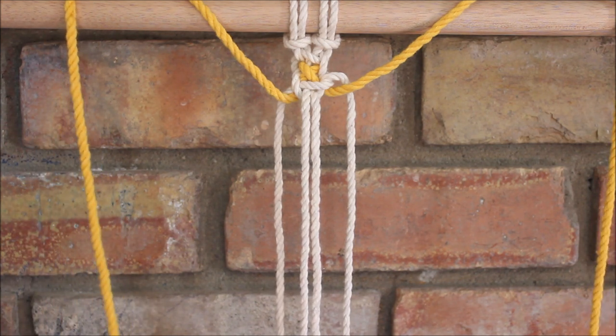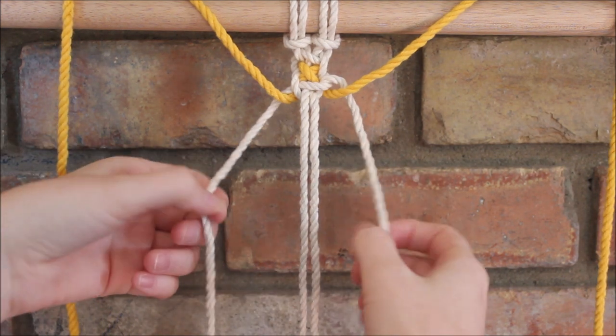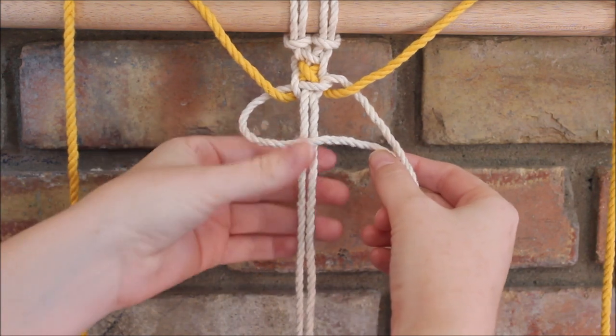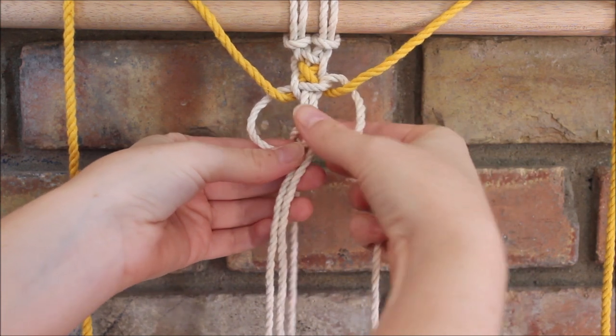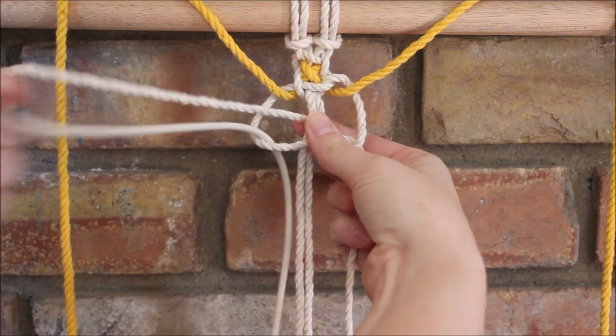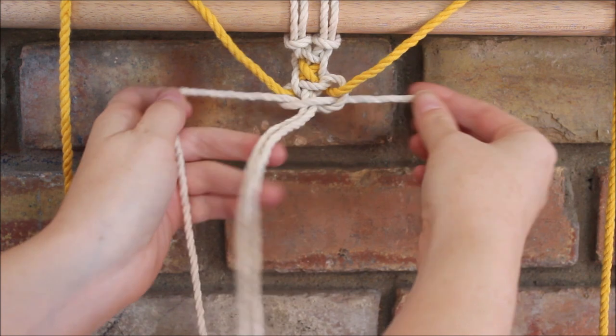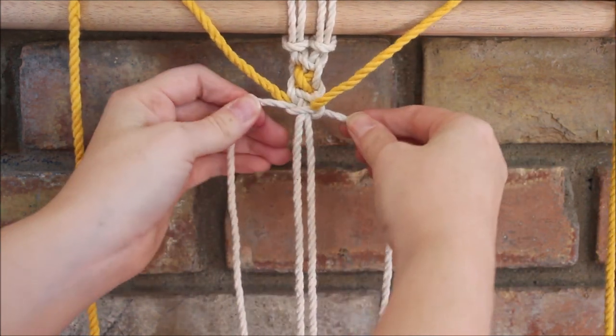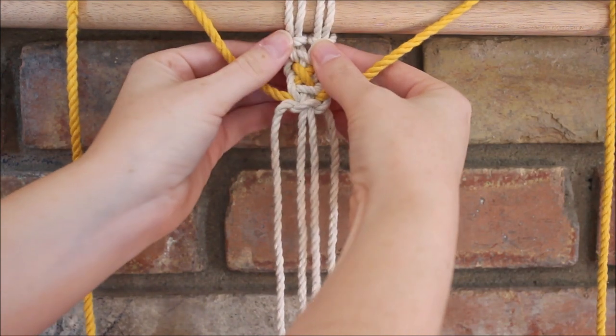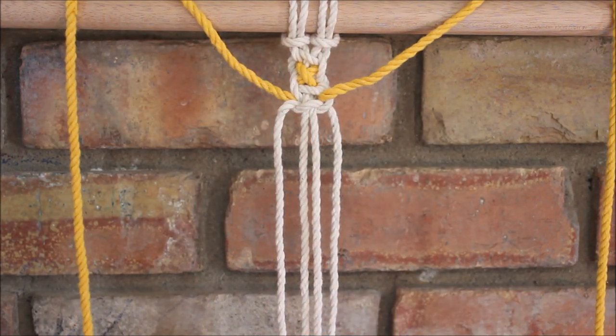Now I'm going to finish my square knot by taking the left cord over the middle, then taking the right over that left cord. I can send it behind the two in the middle to go up through the loop and I pull it tight. Just like that.